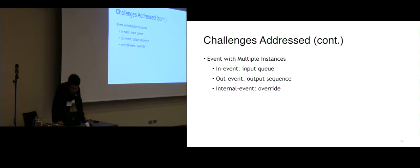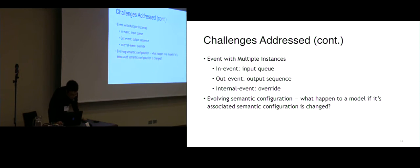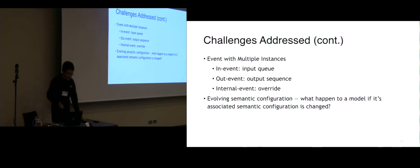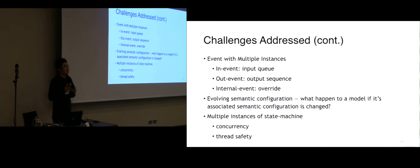Other challenges include events with multiple instances — what happens if multiple instances of the same event are generated — evolving semantic configuration, where the question is what happens to a model if its associated semantic configuration changes, and multiple instances of state machines, where we need to let multiple instances of the same state machine run concurrently without interference.